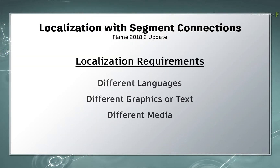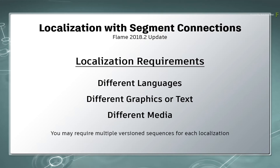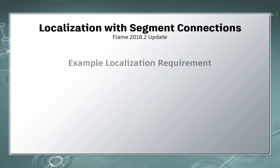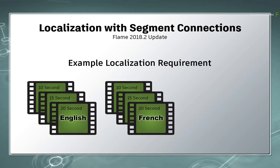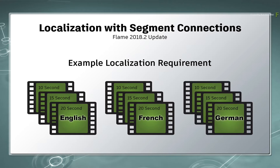These versions could be different languages, graphics or footage. And to add to that, you could still have multiple sequences for each versioning task. As a common scenario, at the end of a production you could be tasked with delivering a 10, 15 and 20 second version in English, French, and German.